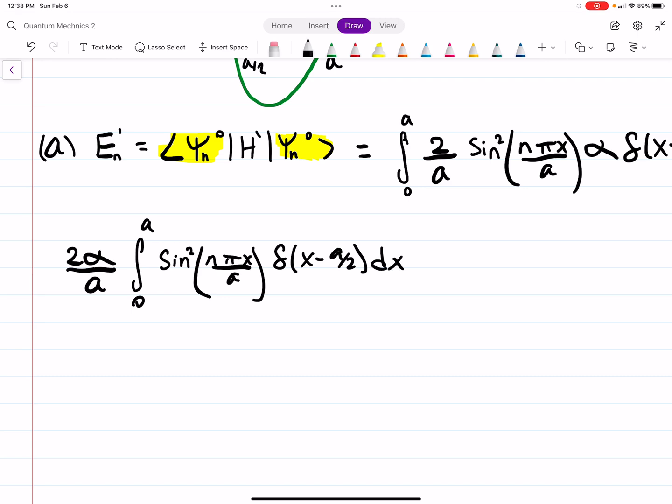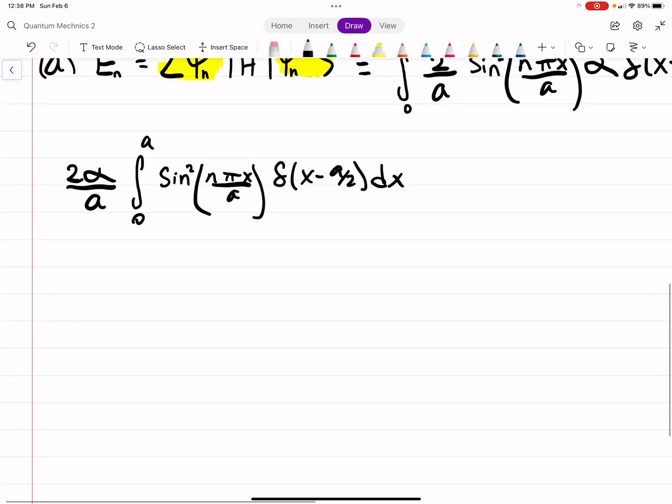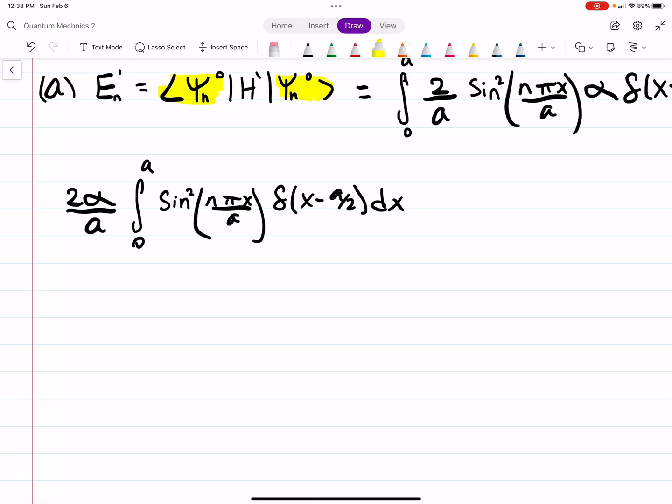So the 2 over A and the alpha, those are constants that can be pulled out of our integral. And we're left with the integral from 0 to A of sine squared of n pi x over A and then the delta function. So the delta function is actually making this a lot easier. If you don't remember how to evaluate this, you find which x value makes this argument 0. In this case, it's x equals A over 2. You plug that into this function, and that is the integral. So very nice. Actually, delta functions make integrals so much easier. So it's going to be sine squared of n pi over 2.